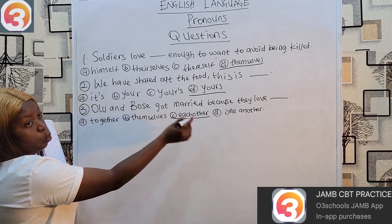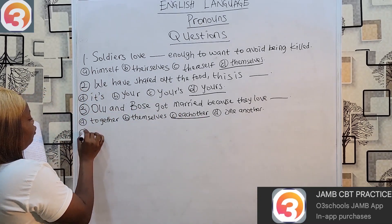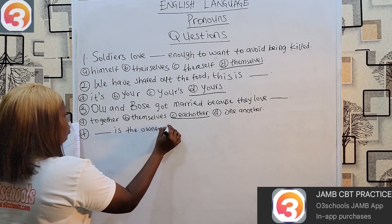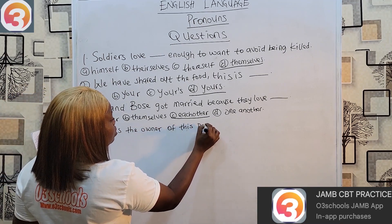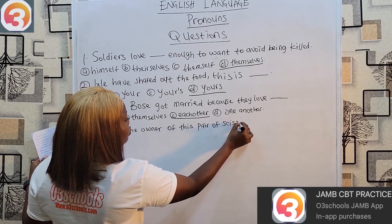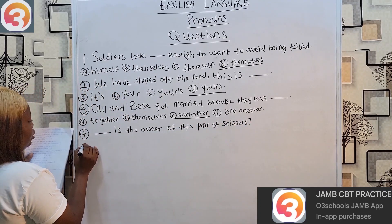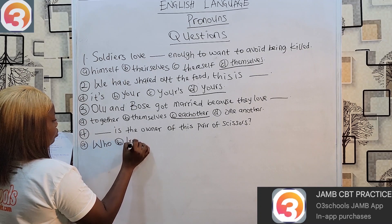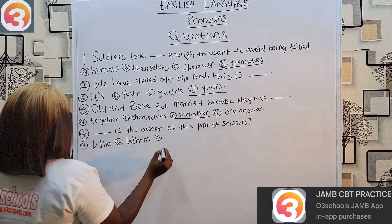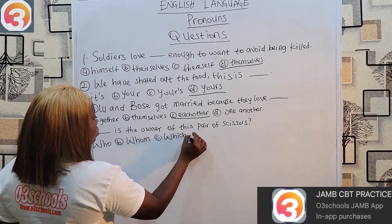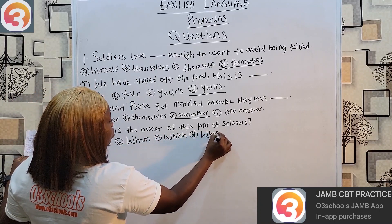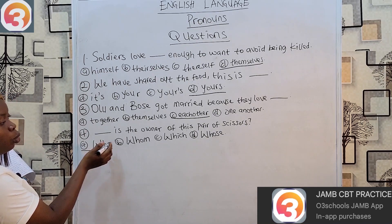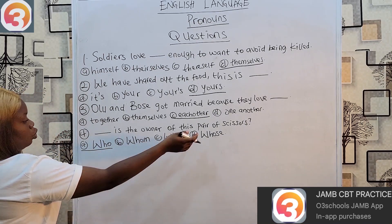Question four: 'Dash is the owner of this pair of scissors?' This is a subject position — we need a subject pronoun. The answer is 'who.' Not 'whom' (object form), not 'which' (for things), not 'whose' (possessive). 'Who is the owner of this pair of scissors?'